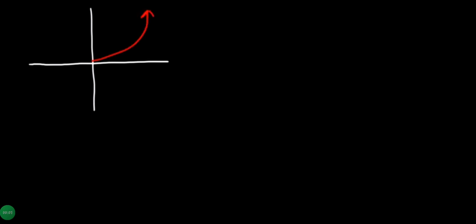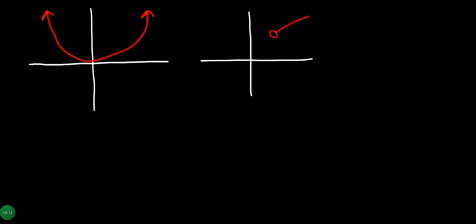This is the continuity graph. The continuity graph is disconnected. This graph is the end hole.